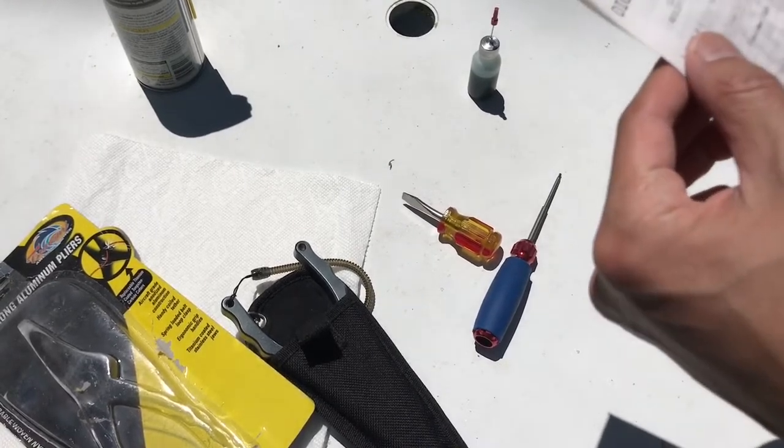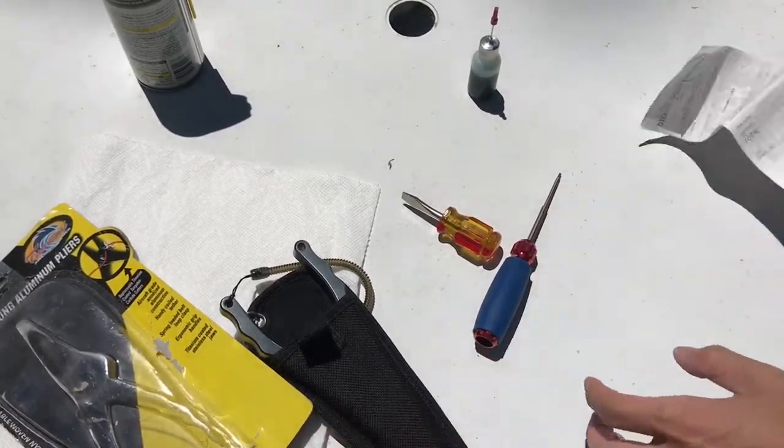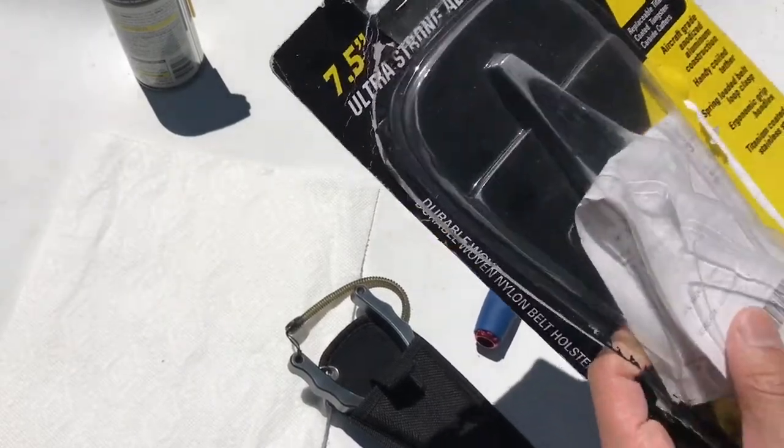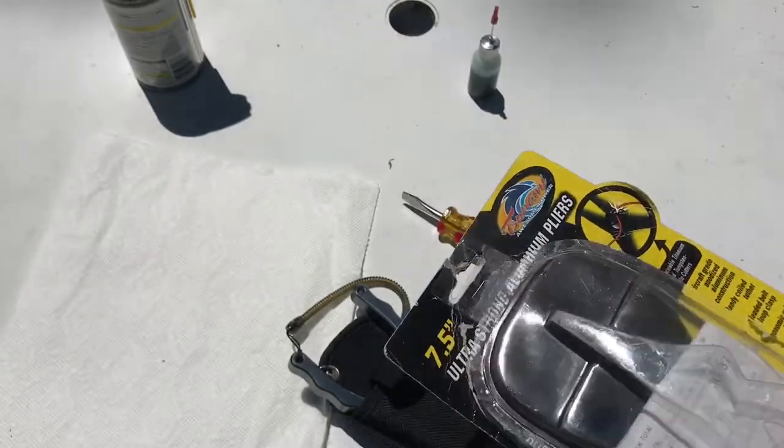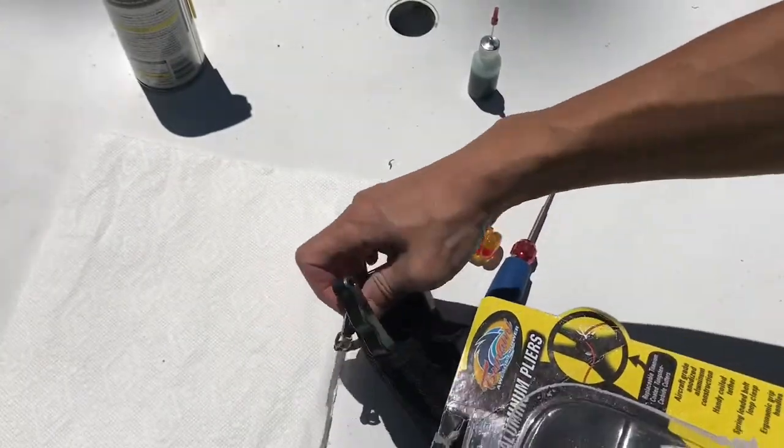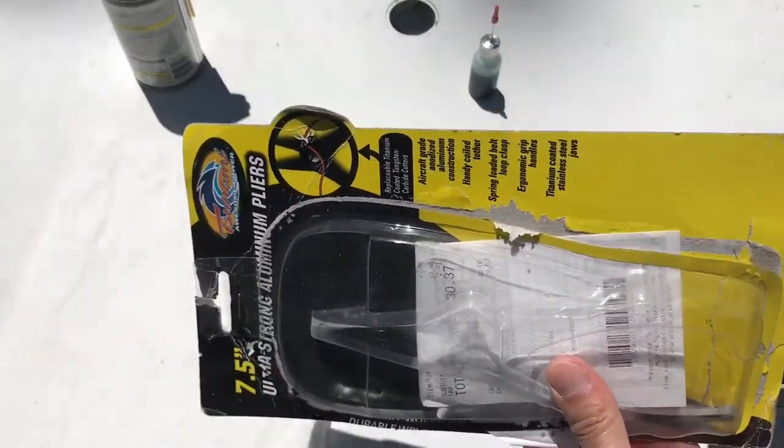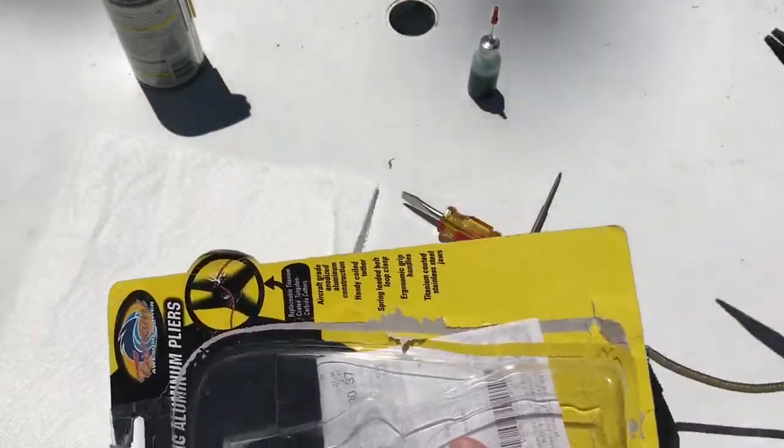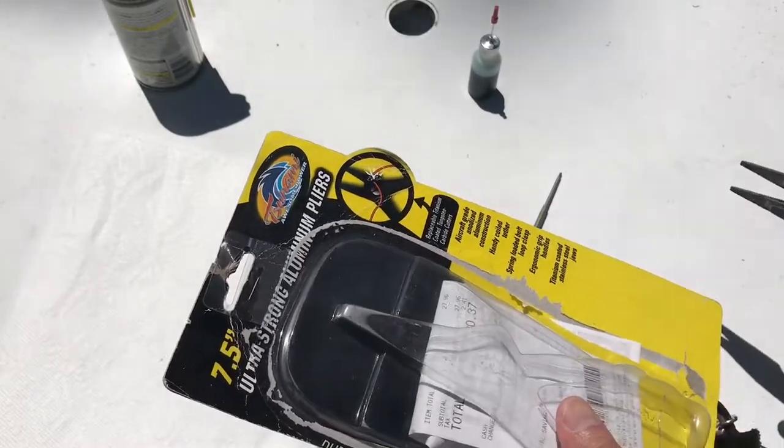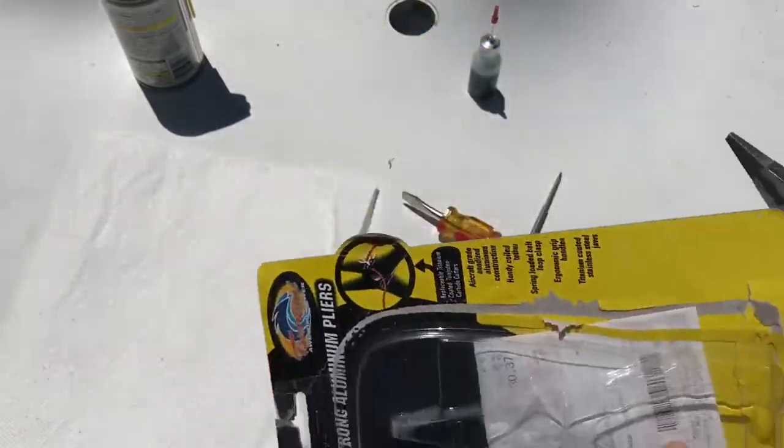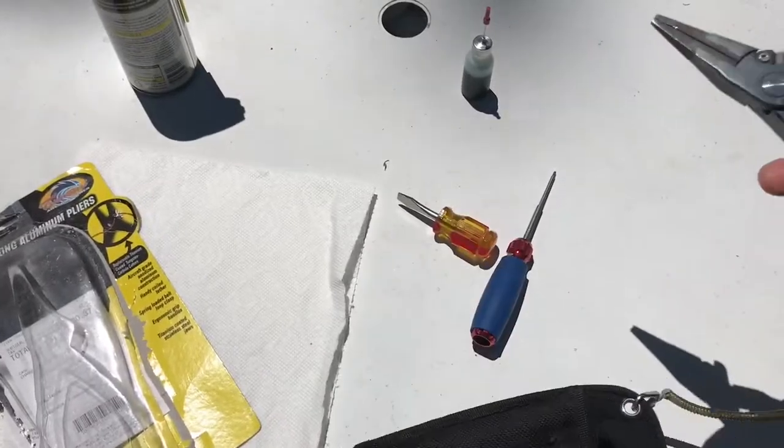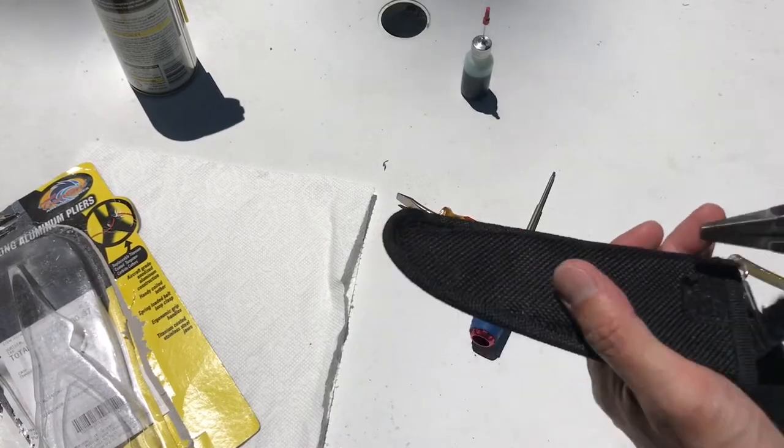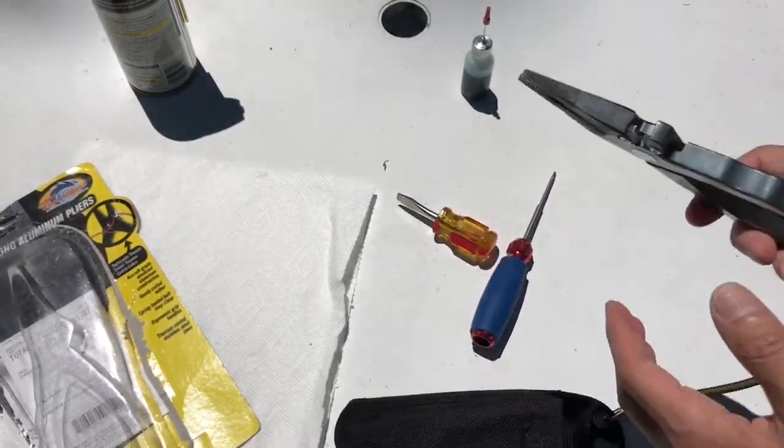I think I had a coupon for $5 off, it was only $29.99. It says it's made of aircraft-grade aluminum. It had a different coiled tether that I took off because the hook was a little big, so I have this smaller one that I got. This has ergonomic grip handles and titanium coated stainless steel jaws.